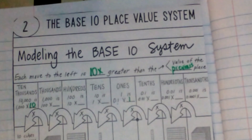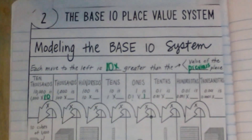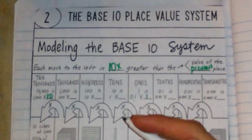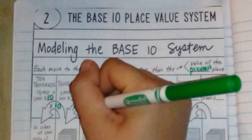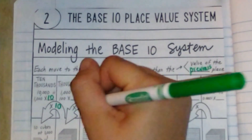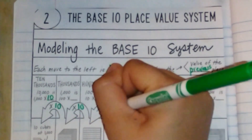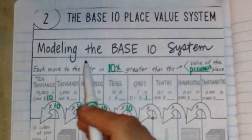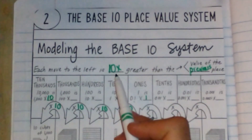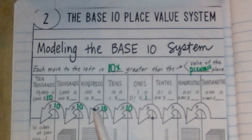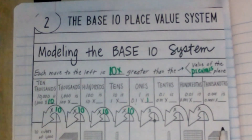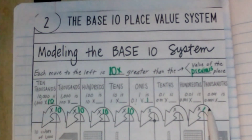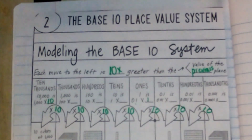So it's one tenth. We are going to be filling out these here, which basically says: as we move to the left, you multiply it by 10 each time.